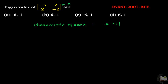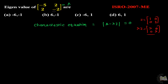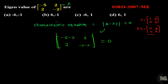The characteristic equation is: determinant of (A minus lambda I) equal to 0. Here A is the given matrix and lambda multiplied with I, where I is the identity matrix [1, 0; 0, 1]. Multiplying gives lambda I = [lambda, 0; 0, lambda]. Subtracting from A gives the matrix [(-5 minus lambda), 2; -2, (-2 minus lambda)], and its determinant equals 0.